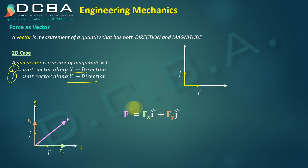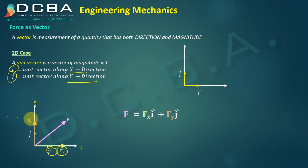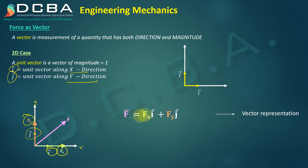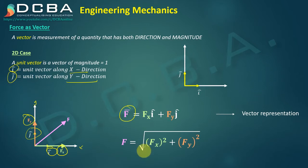What we do is write F vector as equal to Fx times i cap plus Fy times j cap. That is, we multiply the magnitude of the horizontal component of the force by the unit vector along x, and multiply the magnitude of the vertical component of the force by the unit vector along y. This way, this becomes a vector in x direction and this becomes a vector in y direction — this is the vector representation of any force. If you need the magnitude of this force vector, you take F equals the square root of Fx squared plus Fy squared.